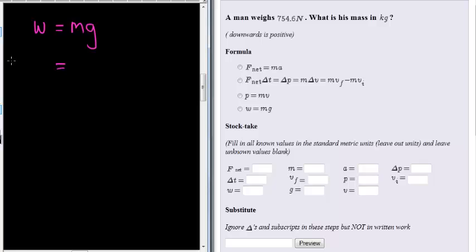We are given his weight as 754.6 Newtons. His mass is equal to, well we don't know, that's what we want to calculate. And the gravitational constant is 9.8.